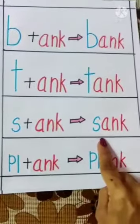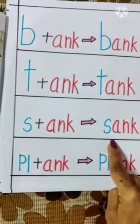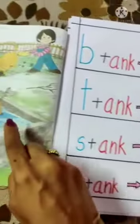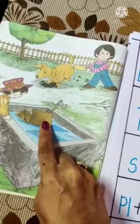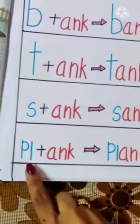S-ank. Sank. Sank ka matlab hota hai doob jana. Look here, the sack is sank. Yah jo sack hai, yah doob gahi hai.